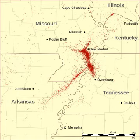The term intraplate earthquake refers to a variety of earthquake that occurs within the interior of a tectonic plate. This stands in contrast to an interplate earthquake, which occurs at the boundary of a tectonic plate. Intraplate earthquakes are relatively rare compared to the more familiar boundary-located interplate earthquakes.